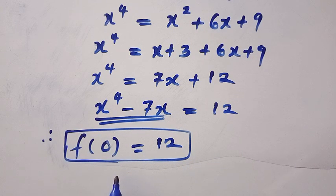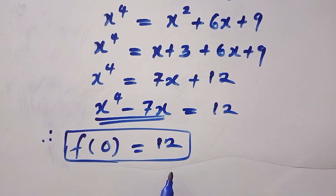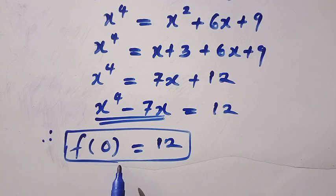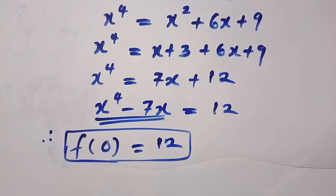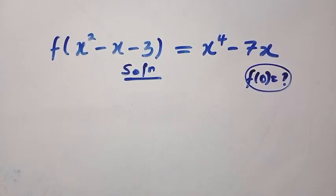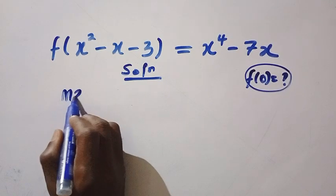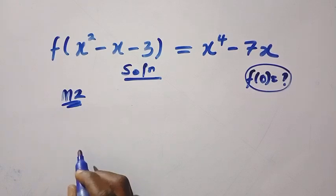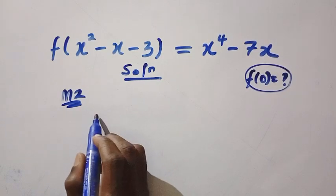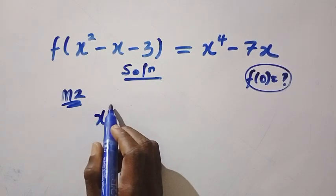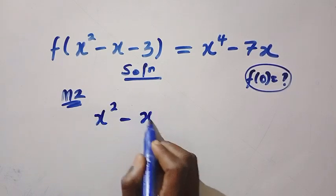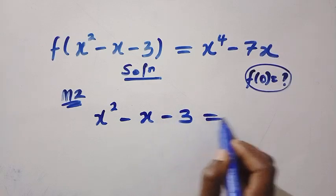You like what you see? Let's get into the second method. This is the one that will blow your mind. For the second method, if I let x squared minus x minus 3 equals 0...